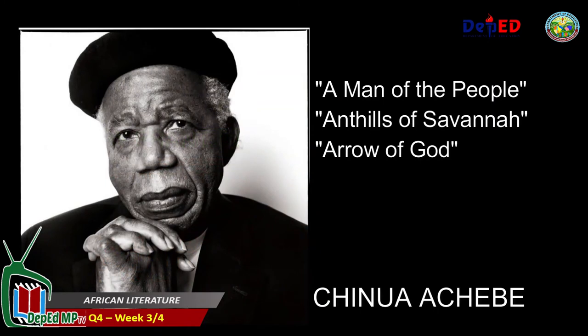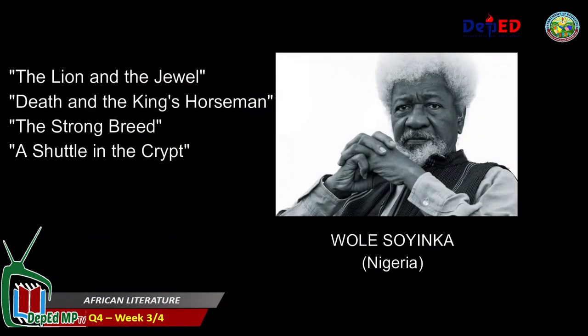Meanwhile, legendary author Chinua Achebe went on to write and publish famous novels like A Man of the People, Anthills of the Savannah, Arrow of God, and many more. Another notable author of the post-independence period was 1986 Nobel Prize winner, Nigerian playwright Wole Soyinka, who published many works including The Lion and the Jewel, Death and the King's Horseman, The Strong Breed, A Shuttle in the Crypt, and much more.